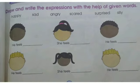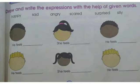Now look at the next statement: draw and write the expression with the help of the given words. Some faces are given to you. You have to draw face expressions and write these expressions in the blanks. The first face expression is happy, second is sad, third is angry, fourth is scared, fifth is surprised, and the last one is silly.